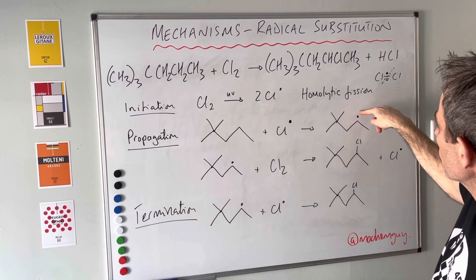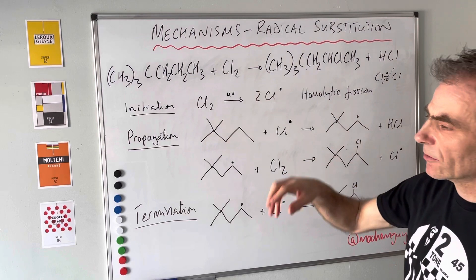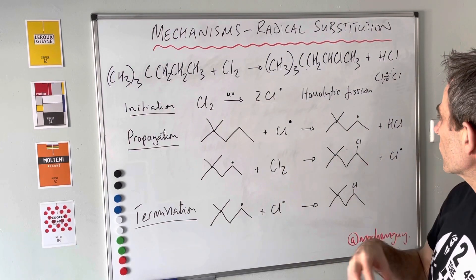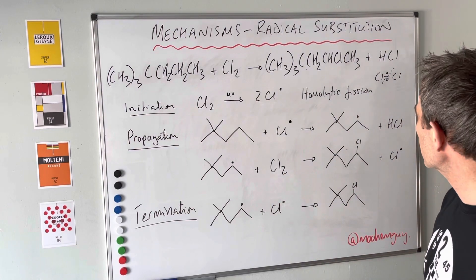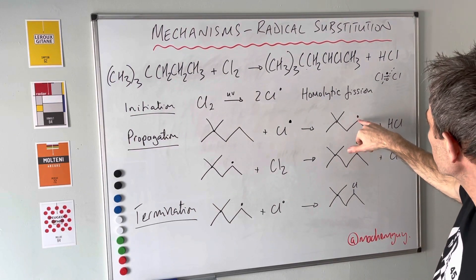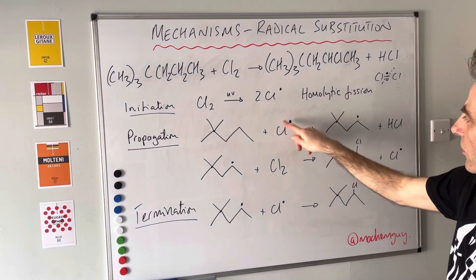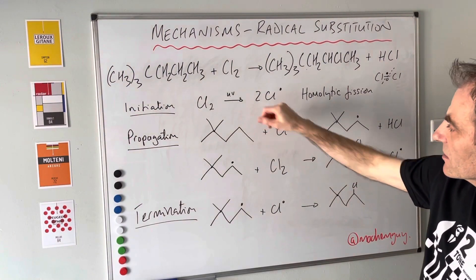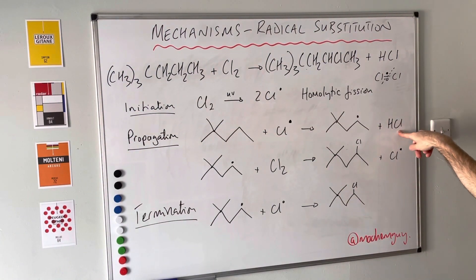That's where the dot needs to be. Remember, the question said use dots to show the position of the unpaired electron. The hydrogen's gone off there, and the chlorine radical and H with its electron have formed an HCl molecule.